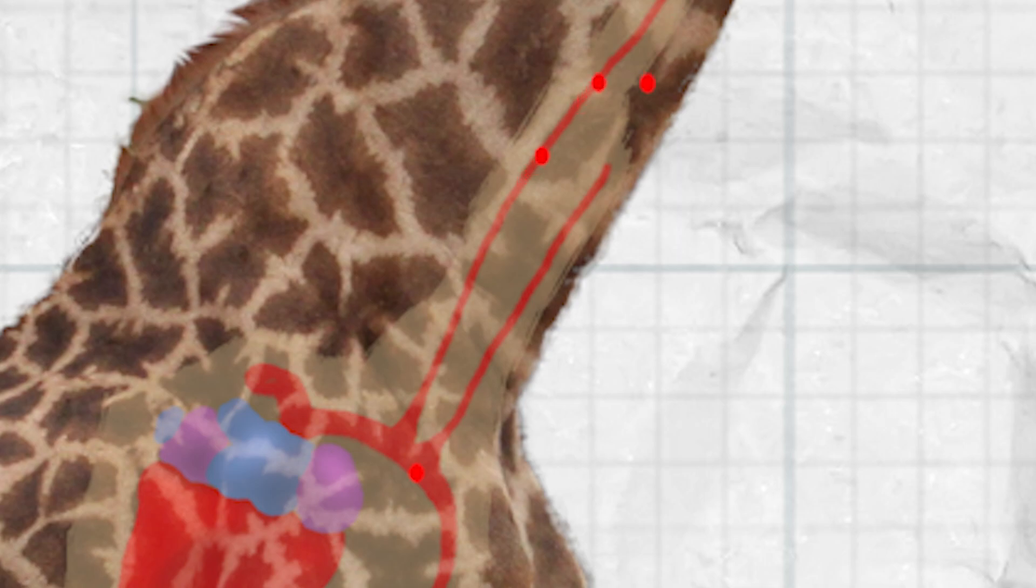They also have one-way valves in their arteries. That keeps the blood that's returning from their brain to their heart from flowing back into the brain and killing them.